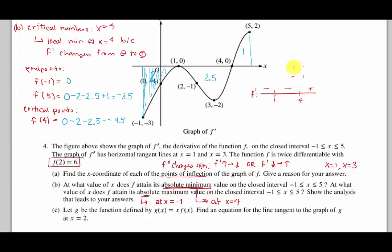Now to do part C, let g of x be defined by x times f of x. Find an equation for the line tangent to the graph of g at x equals 2. Of course, in order to find a tangent line, I need a slope and I need a point. So let's start with finding the point.